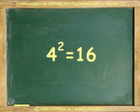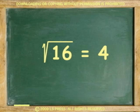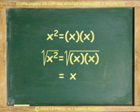To wrap up this thing on inverses, we say that 4 square equals 16. And then, of course, the square root of 16 is 4. And x square equals x times x. And then, the square root of x square is the square root of x times x, or just x.